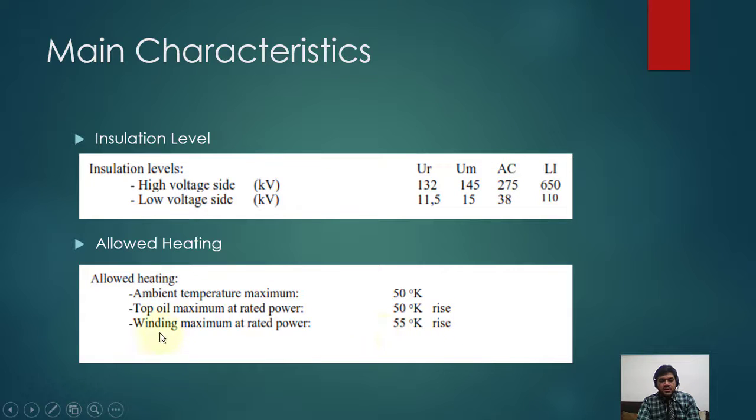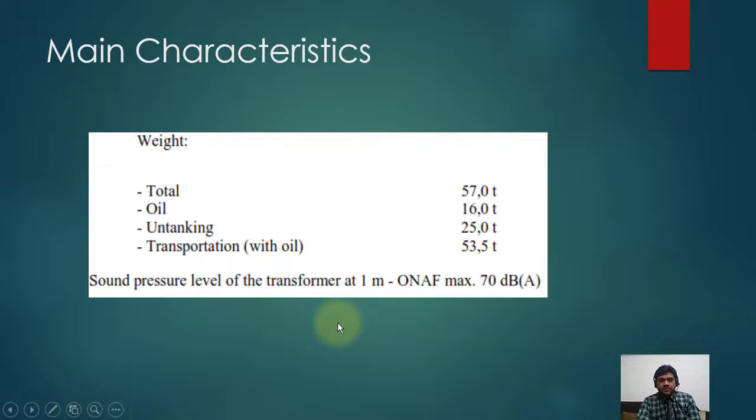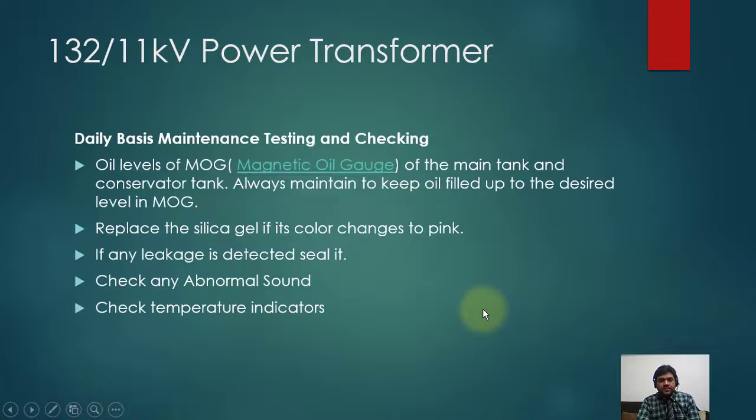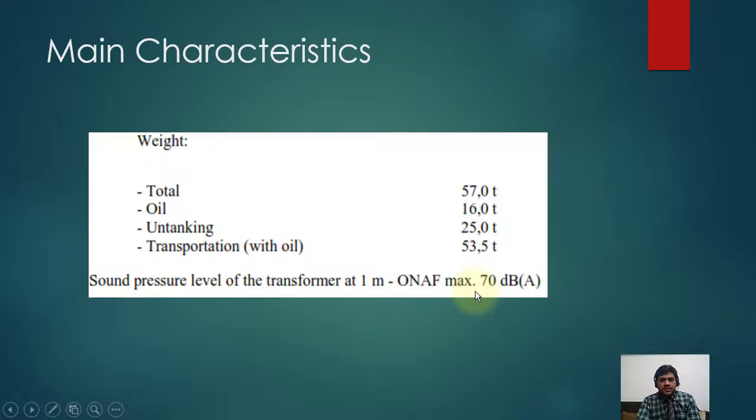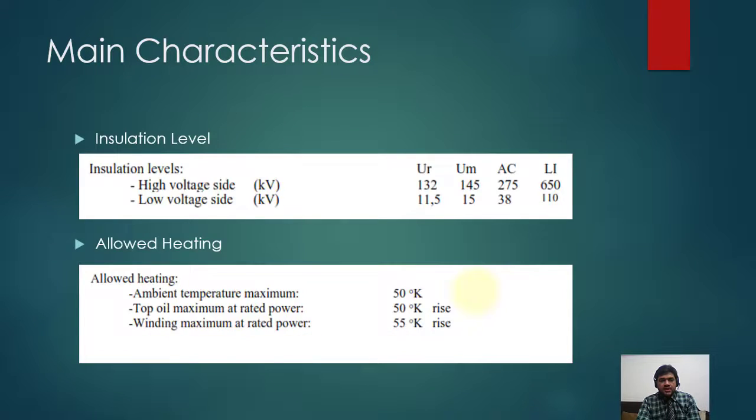The temperature, different types of temperatures and allowed heating are shown here. Weight is also shown: total weight, weight of oil, tanking, transport without oil. Everything is mentioned here. The sound level, how much decibel, how noisy the transformer is, is also shown here.